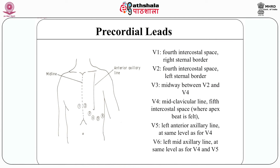The six precordial lead sites are: V1 is placed at the 4th intercostal space at the right sternal border. V2 is placed at the 4th intercostal space at the left sternal border. V3 is placed between V2 and V4. V4 is placed at the mid-clavicular line at the 5th intercostal space. V5 is placed at the left anterior axillary line at the same level as V4. V6 is placed at the left mid-axillary line at the same level as V4 and V5.